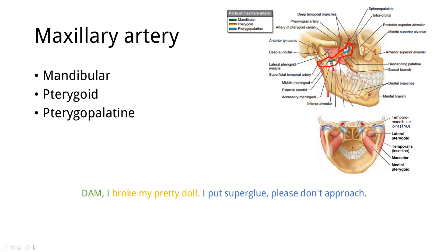The mandibular part is posterior to the lateral pterygoid muscle. The pterygoid part is adjacent. And the pterygopalatine part is anteromedial. It enters the pterygopalatine fossa through the pterygomaxillary fissure.